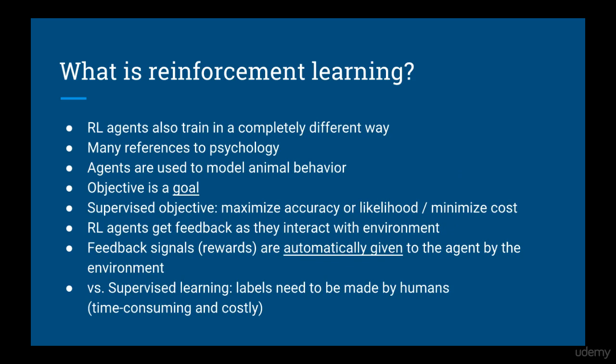The big leap isn't just that the interface with the AI is way more broad, but that reinforcement learning algorithms train in a completely different way as well. You'll see quite a lot of references to psychology, and indeed reinforcement learning can be used to model behavior. Reinforcement learning algorithms have objectives in terms of a goal — this is different from supervised learning where the objective is to get good accuracy or to minimize the cost function. An agent will try to maximize not only its immediate reward, but future rewards as well, and rewards are given automatically to the agent by the environment. This is much different from supervised learning, where it can be extremely costly and time consuming to obtain hand-labeled data.